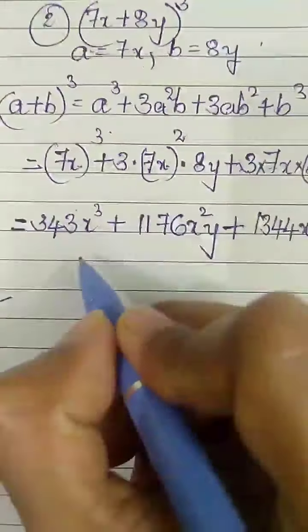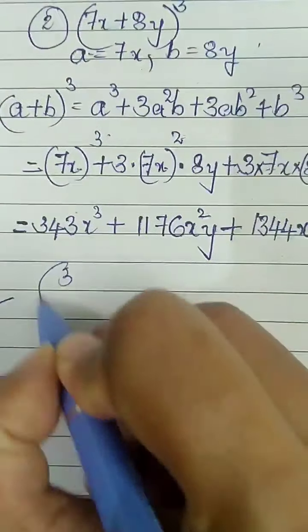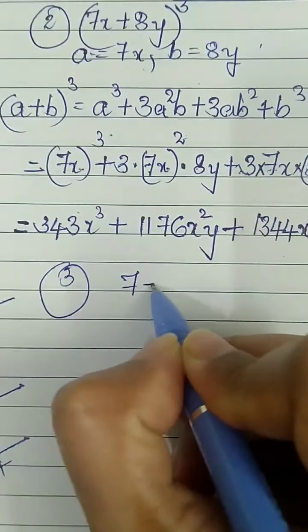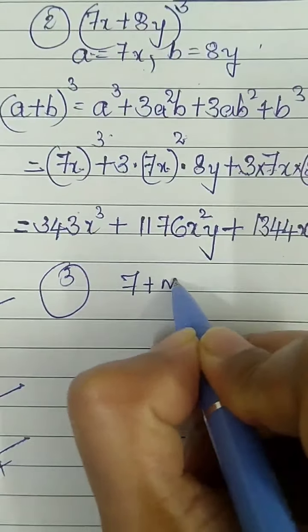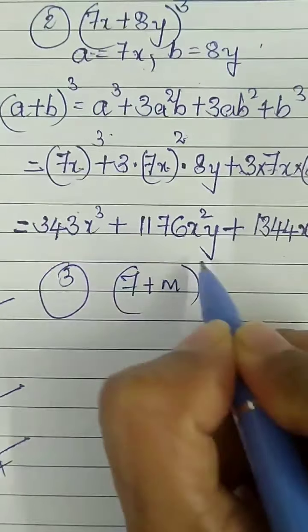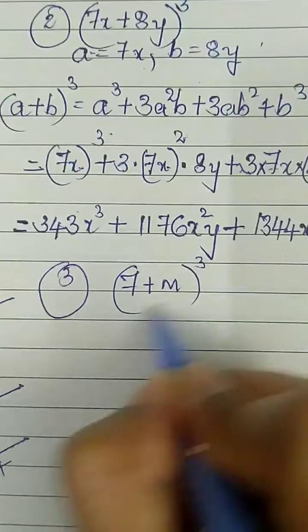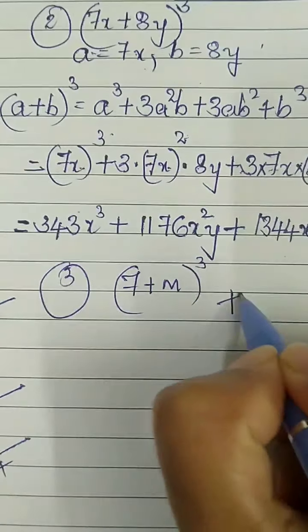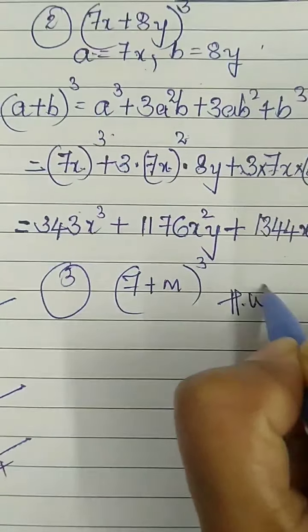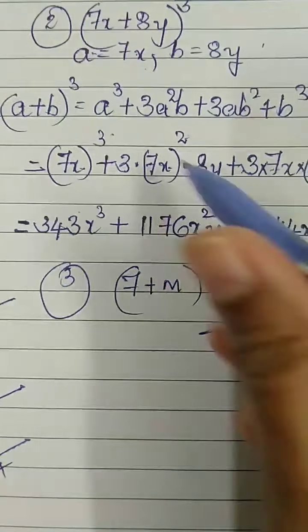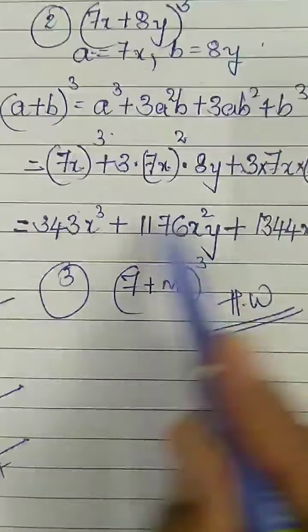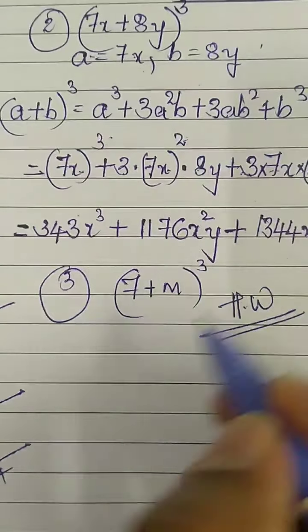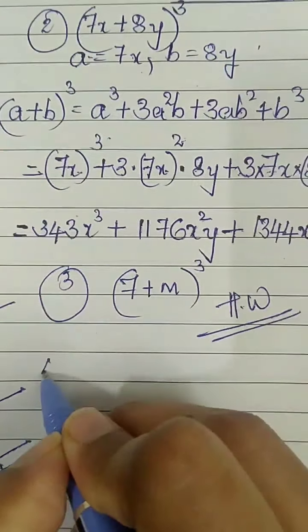Sum 3: (7 + m)³. This is a very easy sum. I am giving you this as homework. You can refer to the formula and solve it.